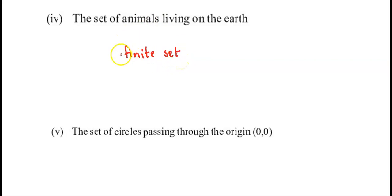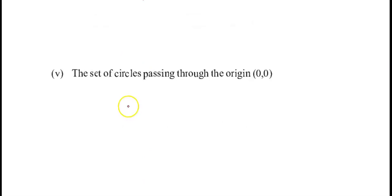The set of circles passing through the origin. If this is the origin point (0,0), we can pass infinite circles through it. Different circles with different radii can pass through this point, so this set is also an infinite set. These were the finite and infinite sets.